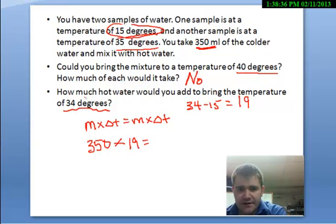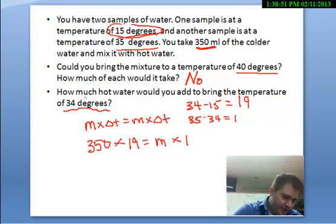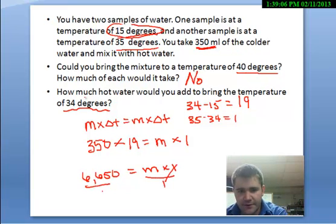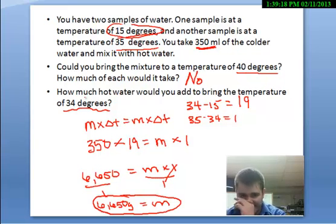And that equals the mass, and that's what they're looking for, times the change in temperature of the hot water. And the hot water is decreasing in temperature from 35 to 34, so 35 minus 34 equals 1. So this change in temperature is 1. Alright, 350 times 19 is equal to 6,650 joules. And that's equal to the mass times 1. And of course, if I divide both sides by 1, then I must add a mass of 6,650 grams of hot water in order to bring this whole mixture to 34 degrees.